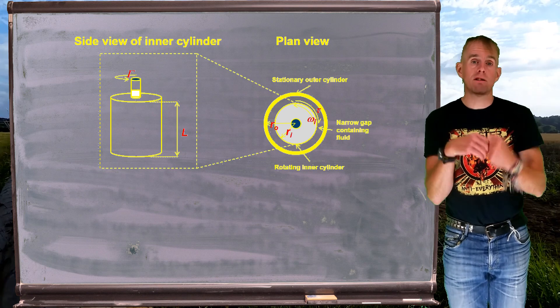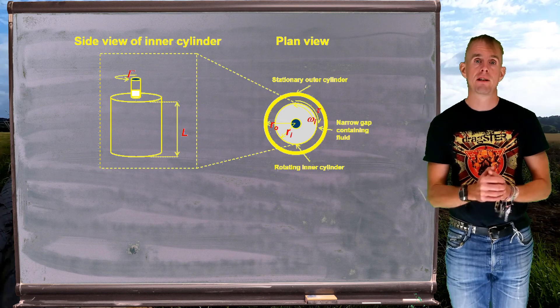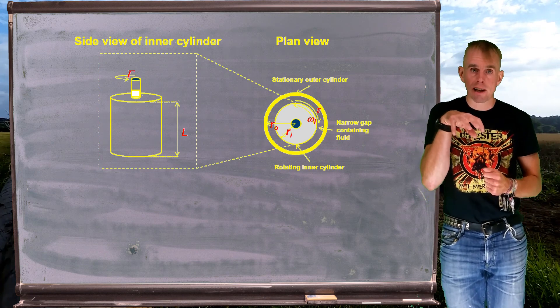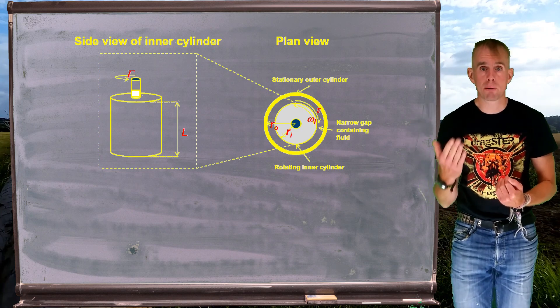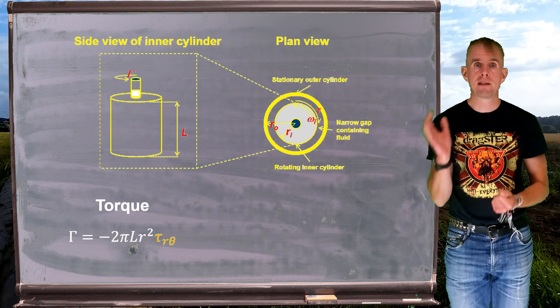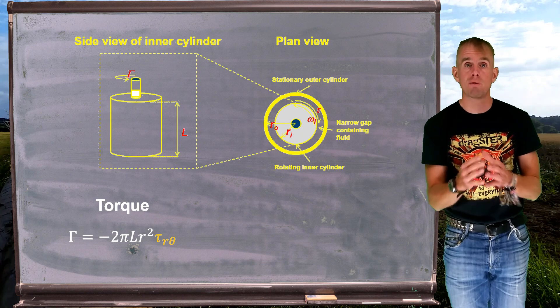We're electing in our example to rotate the inner cylinder and to hold the outer cylinder stationary, and experimentally we set an angular velocity and we measure a torque. So torque is an important experimental result, and remember that torque is related to the shear stress that presents itself on the outer surface of that inner cylinder.